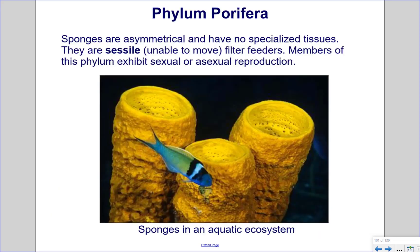Phylum Porifera. Sponges are asymmetrical and have no specialized tissues. They are sessile, which means they are unable to move as adults, and they are filter feeders. Members of this phylum exhibit sexual or asexual reproduction. In this picture, we see sponges in an aquatic ecosystem.